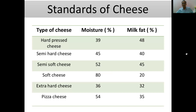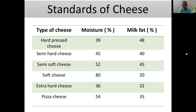Regarding standards: hard-pressed cheese should have 39% moisture and 48% milk fat; some semi-hard cheese should have 45% moisture and 40% milk fat; semi-soft cheese should have 52% moisture and 45% milk fat; soft cheese should have 80% moisture and 20% milk fat; extra-hard cheese should have 36% moisture and 32% fat; and pizza cheese should have 44% moisture and 35% milk fat.